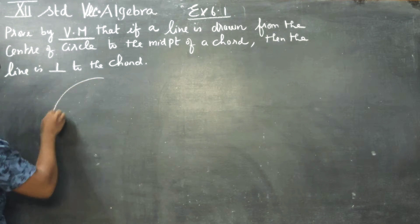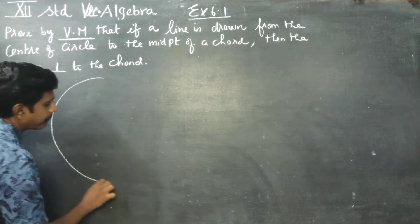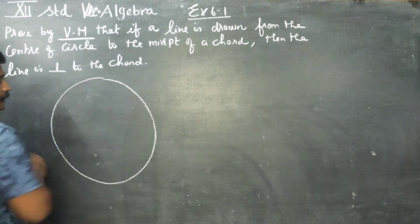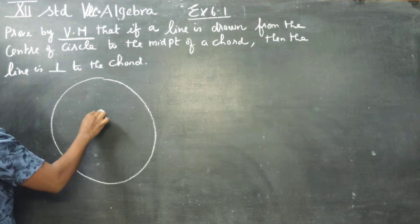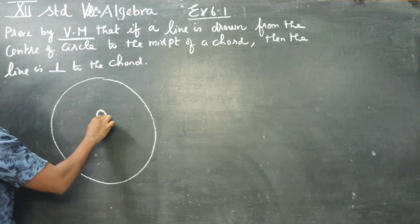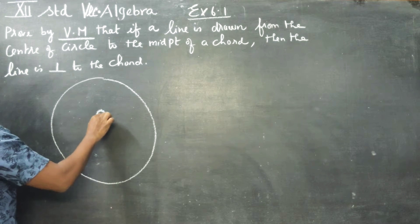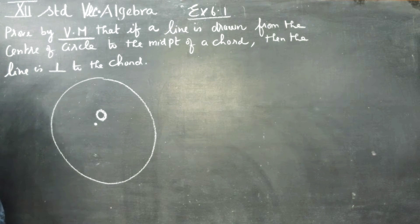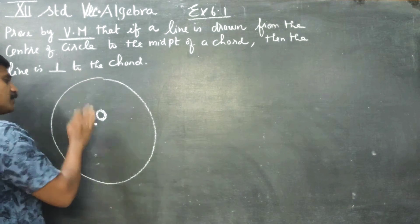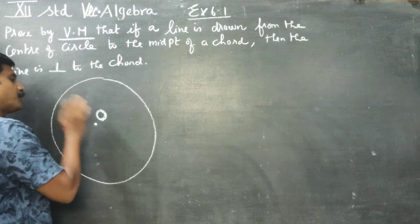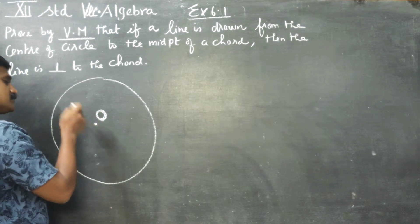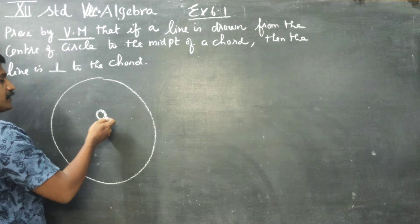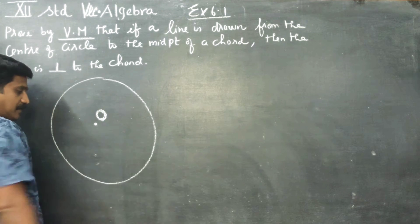Consider a circle. Let O be the origin or point of reference for this vector. O is the point of reference for my vector algebra — you can take this as the center of the circle.